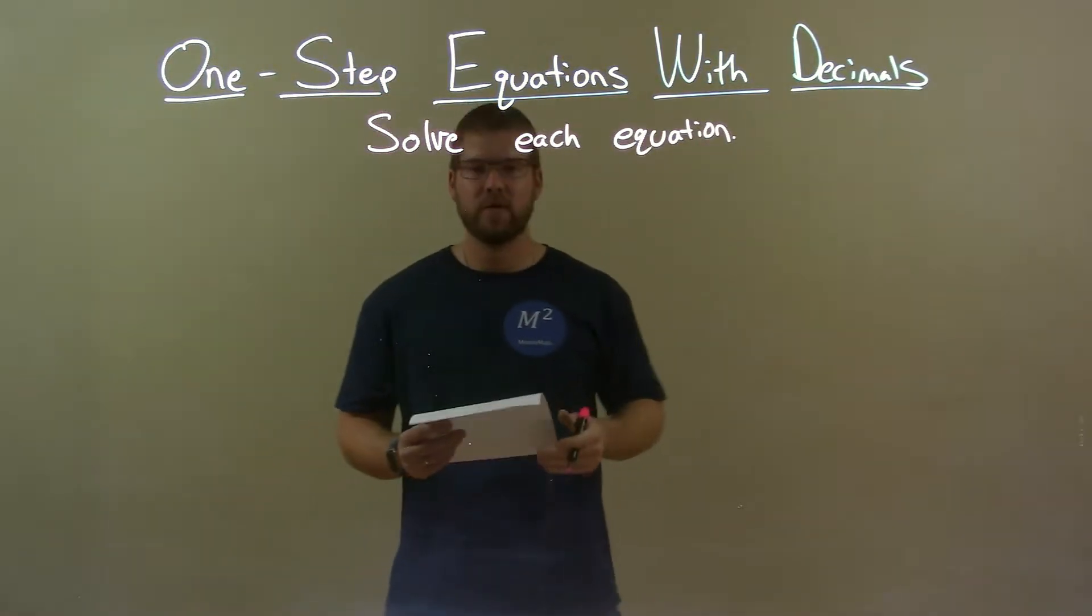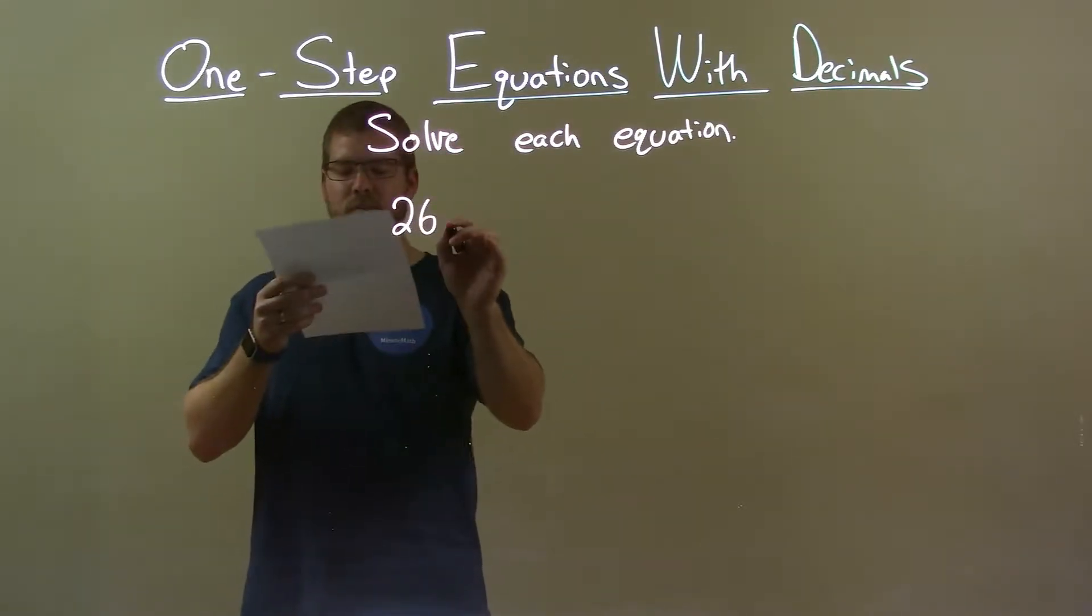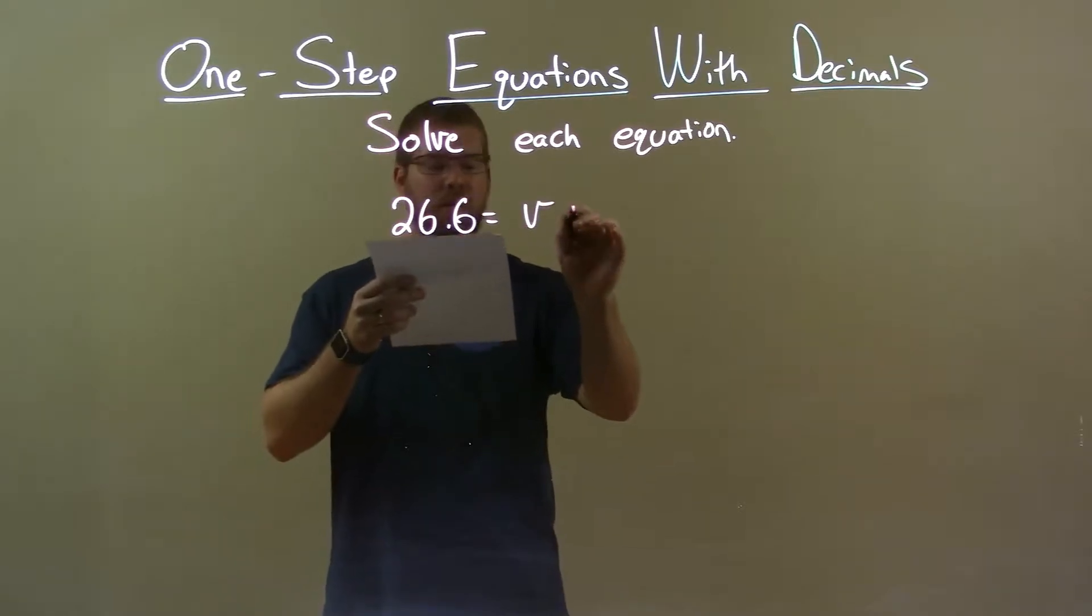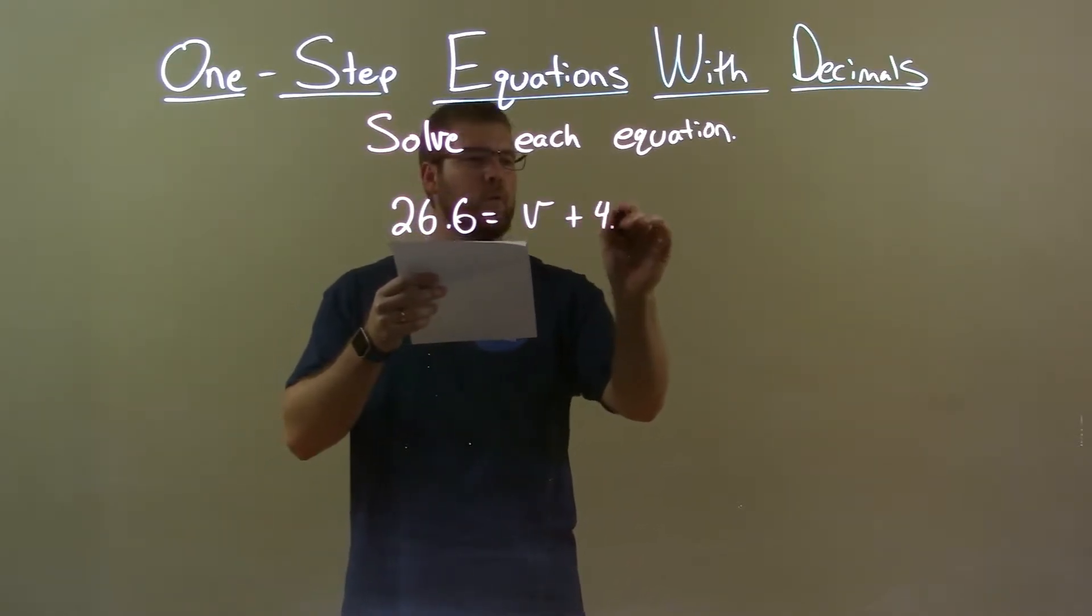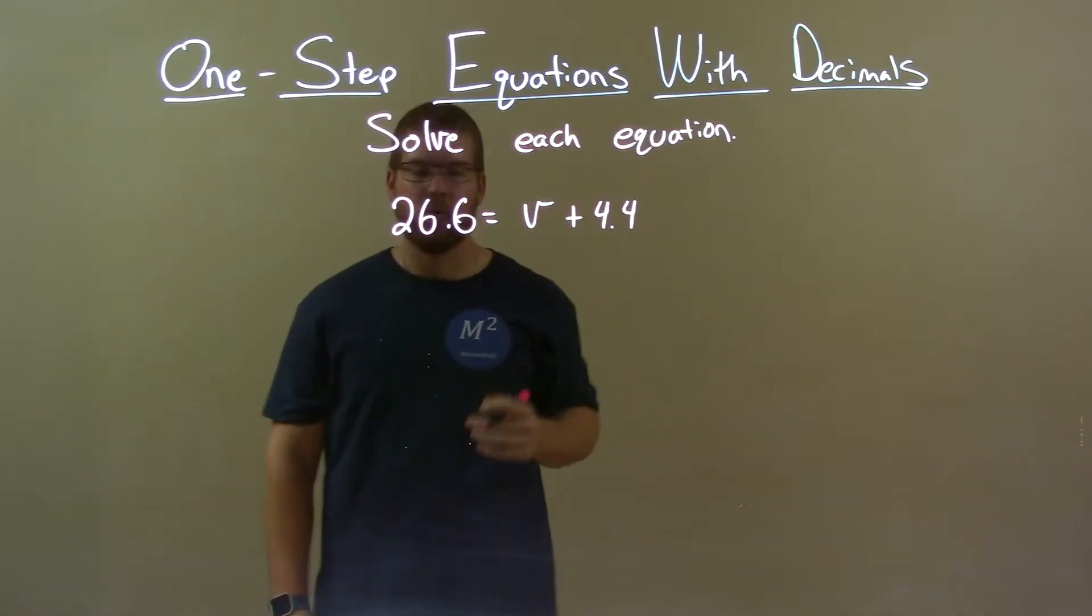We're going to solve each equation. If I was given this equation, 26.6 equals V plus 4.4. Now, we want to get V by itself. We're adding 4.4 to it.